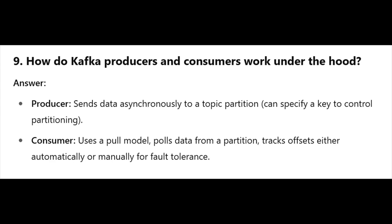Question 9: How do Kafka producers and consumers work under the hood? Answer: Producer — sends data asynchronously to a topic partition, and can specify a key to control partitioning. Consumer — uses a pull model, pulls data from a partition, and tracks offsets either automatically or manually for fault tolerance.